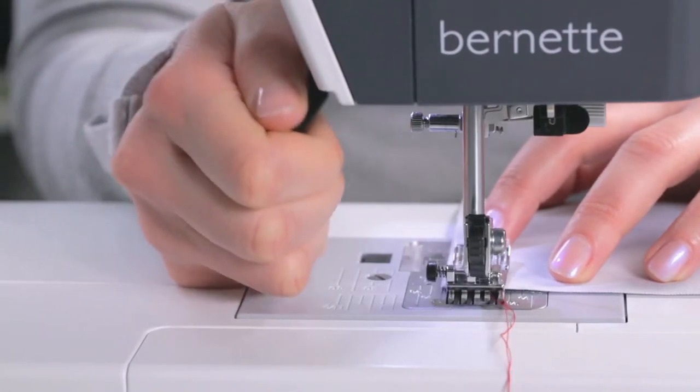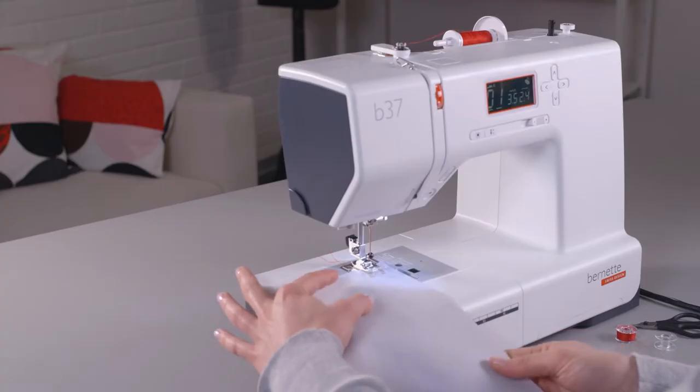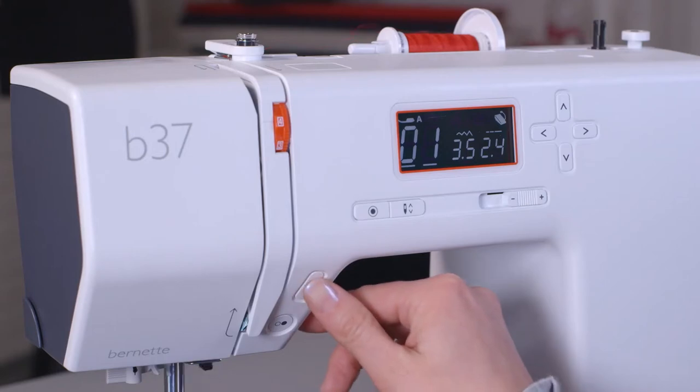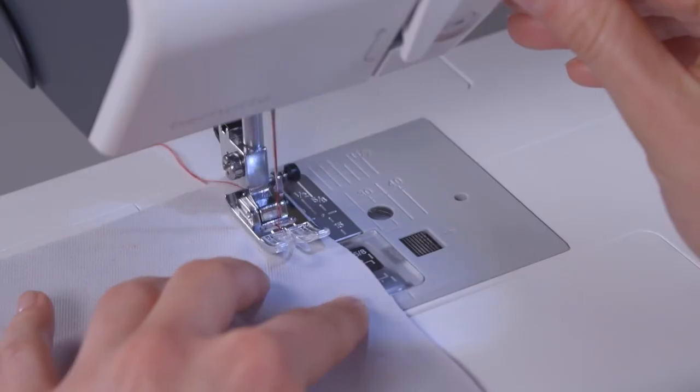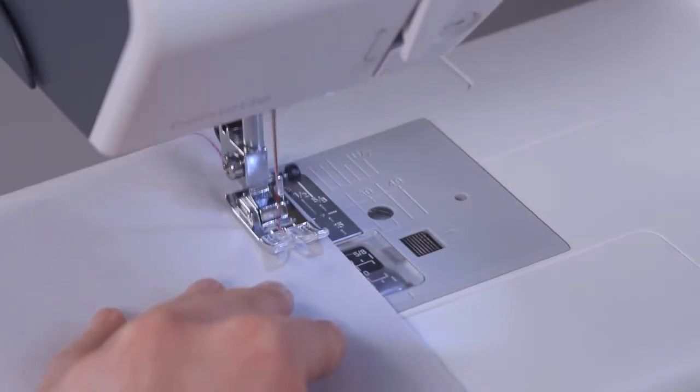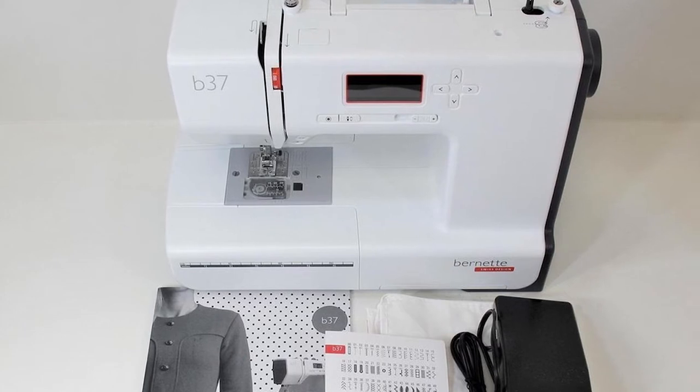To give it that modern touch, it also includes an LCD screen with buttons scattered around it, providing you access to its more advanced features. In terms of size, the B37 is comparable to a small microwave or toaster oven.